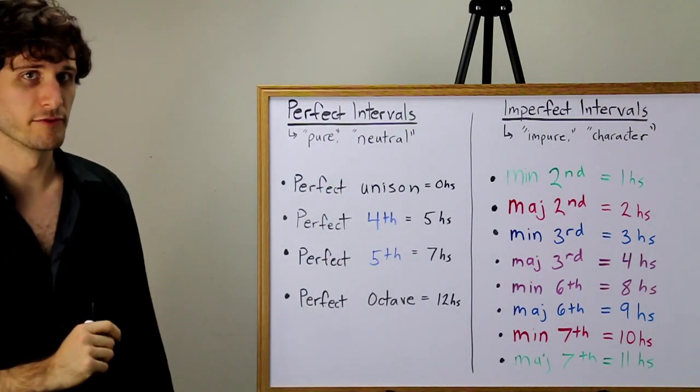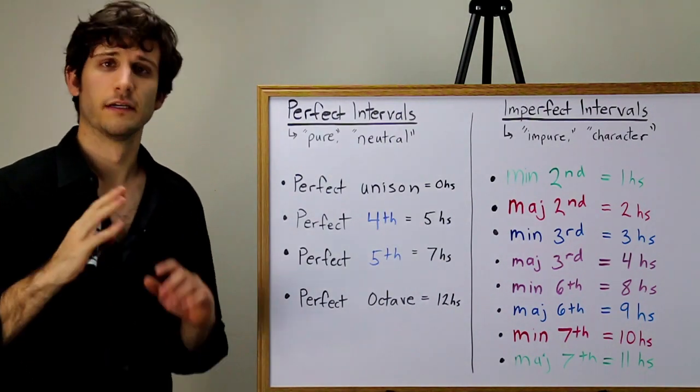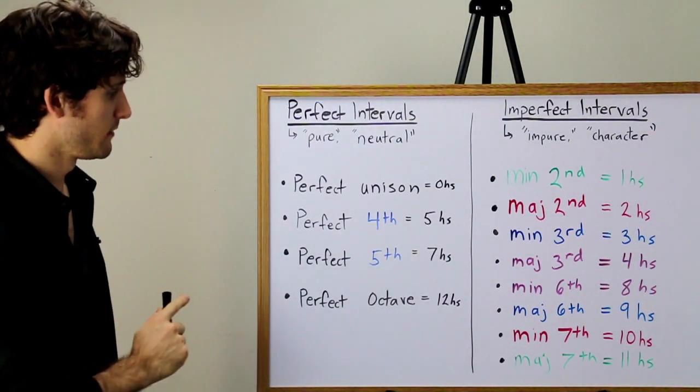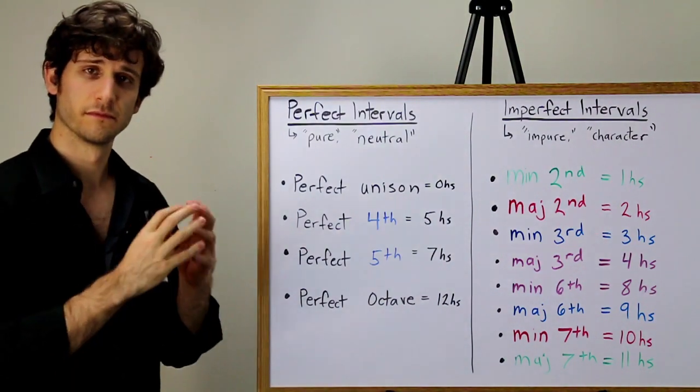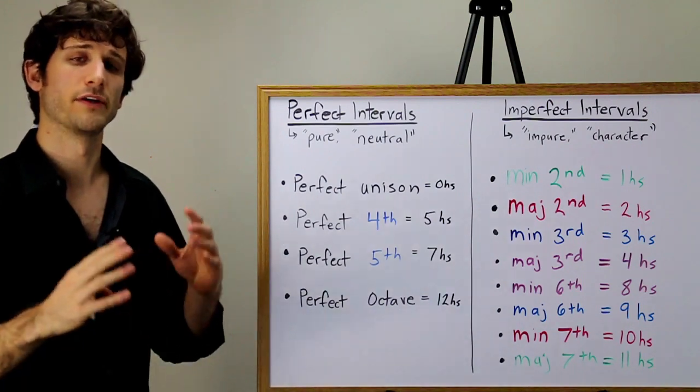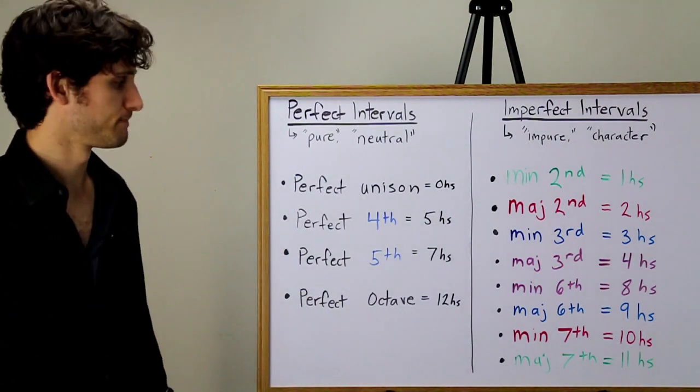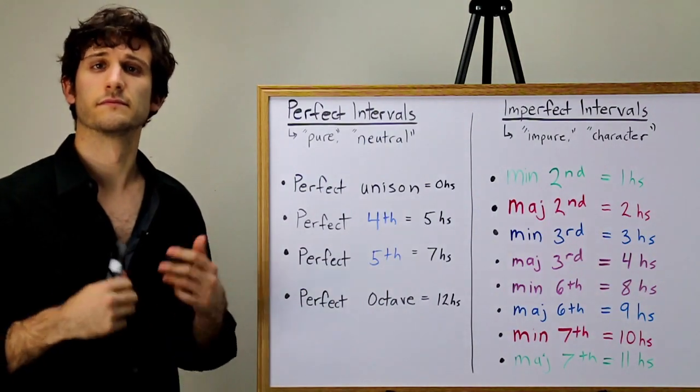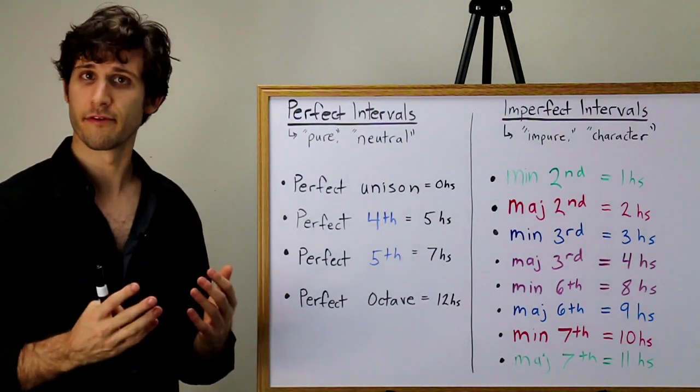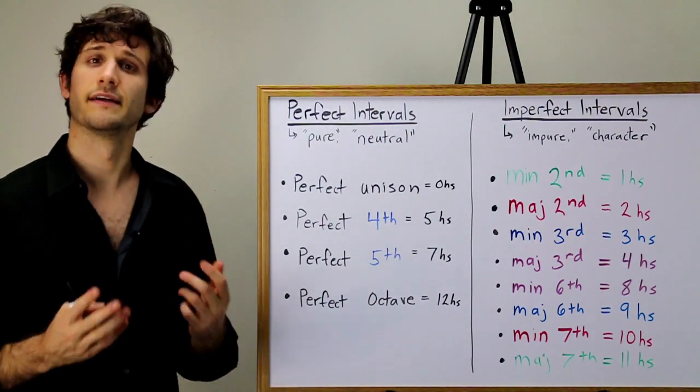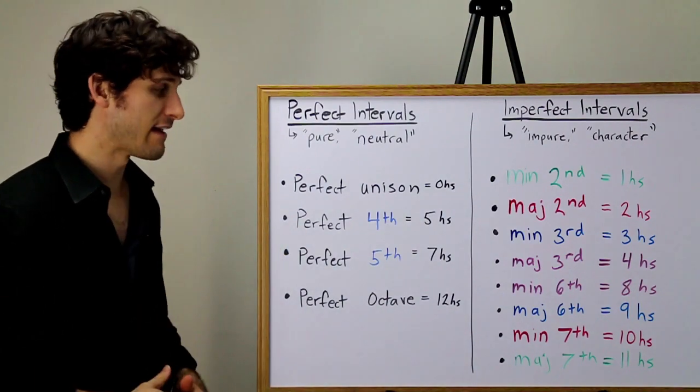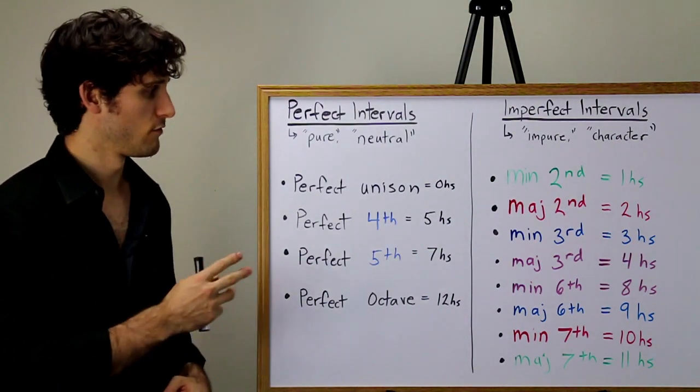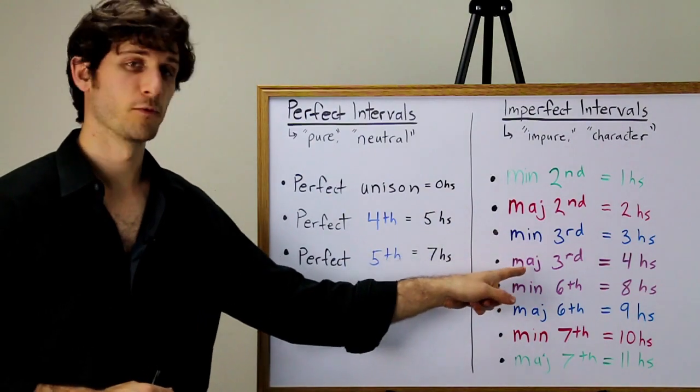But the plot thickens when we introduce the concept of diminished and augmented. Let's get some basic usage concepts out of the way. A perfect interval can be augmented or diminished. When you augment a perfect interval, you expand it by a half step. And when you diminish a perfect interval, you shrink it by one half step. For example, a perfect octave is twelve half steps. So, an augmented octave is thirteen half steps. And a diminished octave is eleven half steps. A perfect fourth is five half steps. An augmented fourth, therefore, is six half steps. And a diminished fourth is four half steps. Same thing as a major third. Which we're going to circle back to that in a little bit.